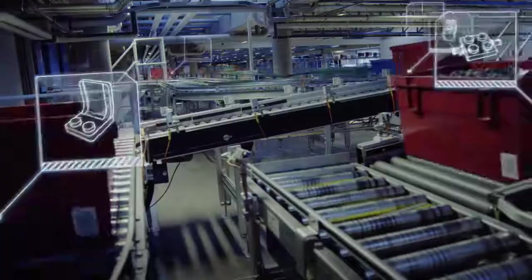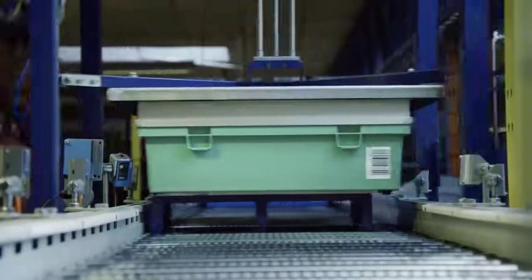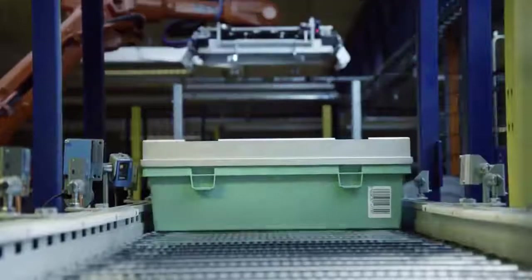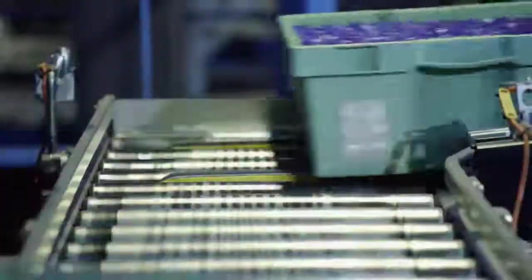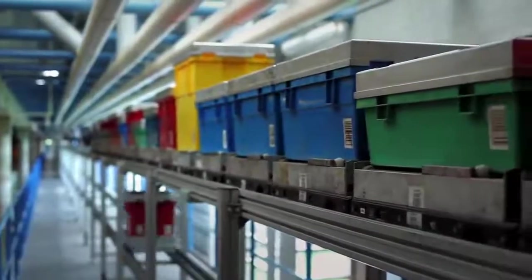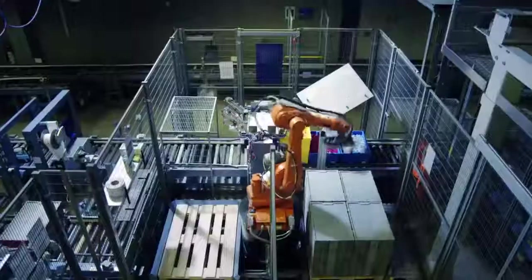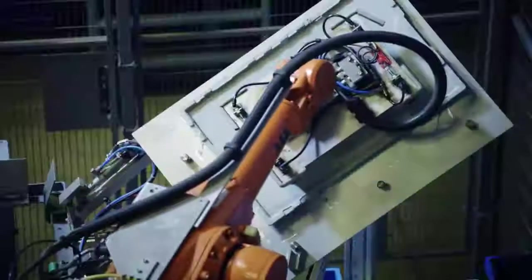A unique barcode identifies the content of each box. The boxes are shaken to even out the content, ensuring it takes up as little space as possible. Now the lids can be closed.